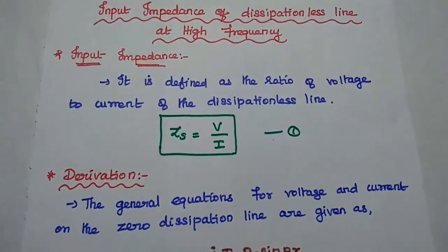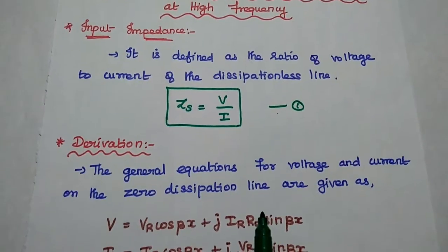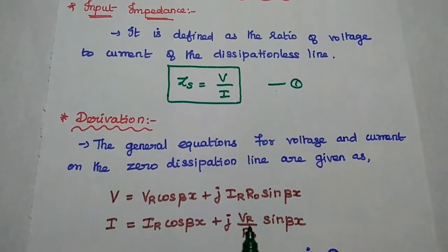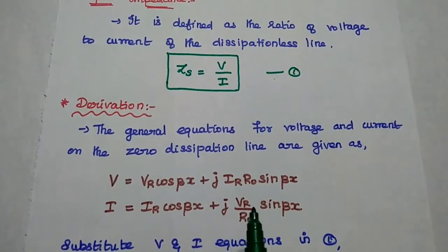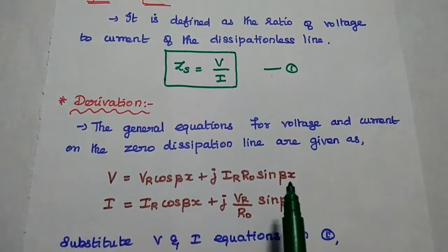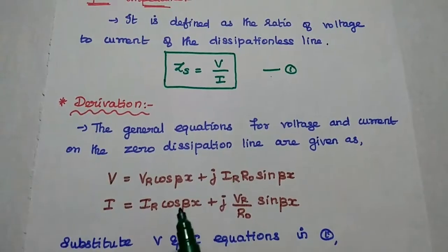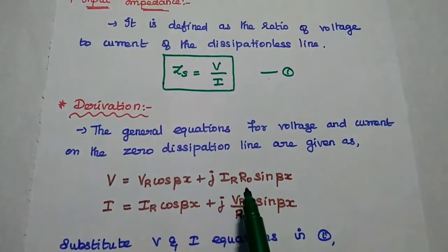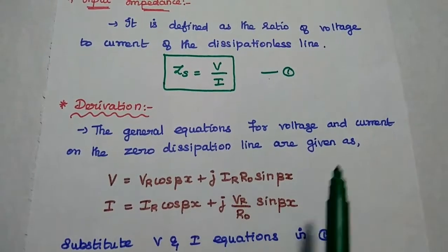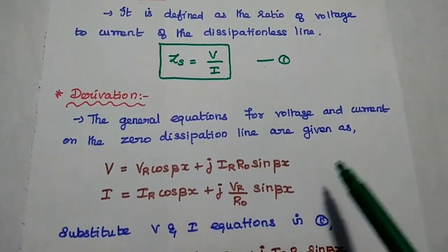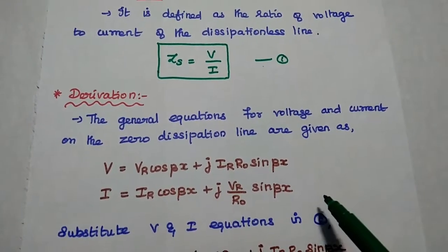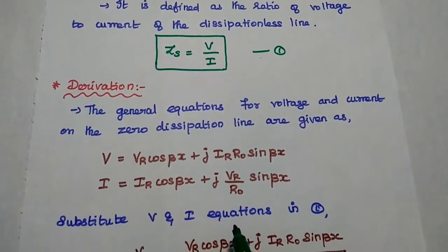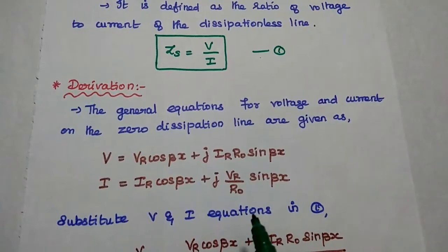Next, we are going to derive the input impedance for the dissipationless line at high frequency range. For that, we can consider the general equations for voltage and current on the dissipationless line. Dissipationless line is also known as zero dissipation line. We have already derived these two equations in the previous lecture video, so we can use those equations directly in this topic.